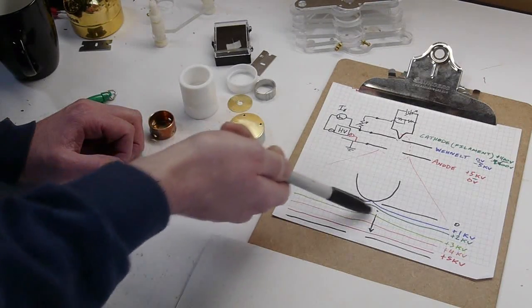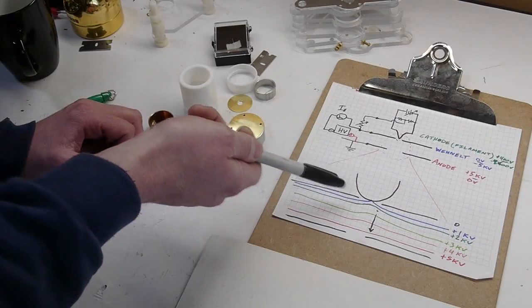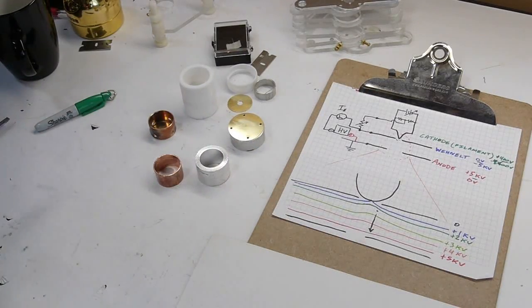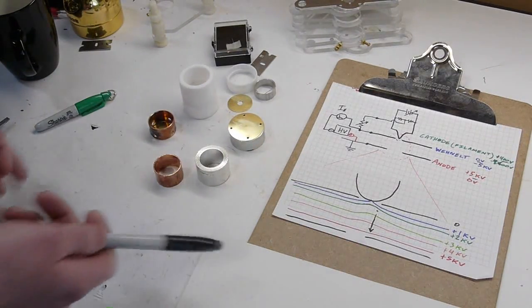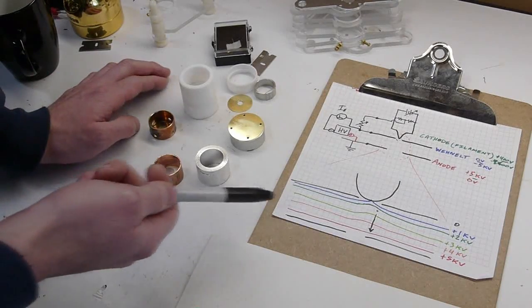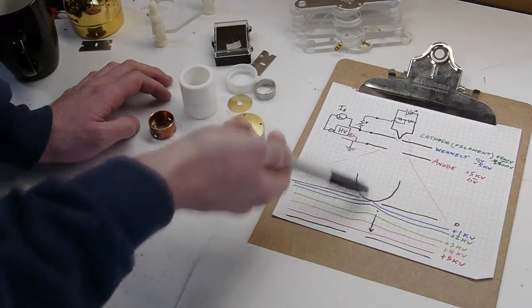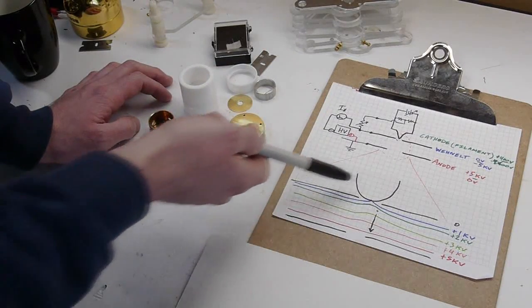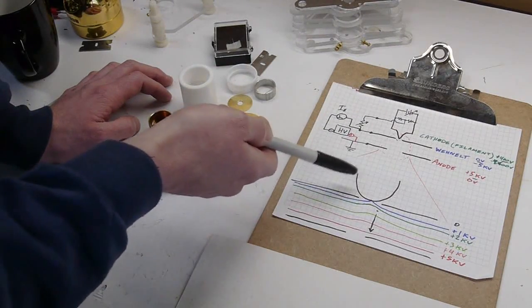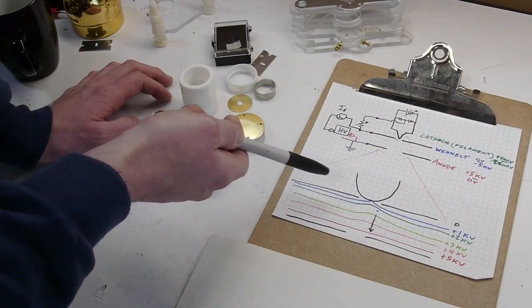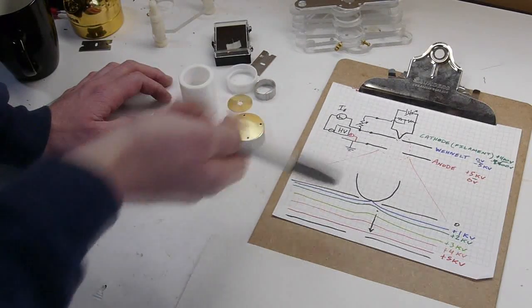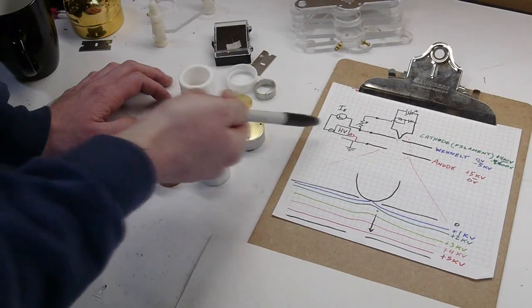So if we look at the two extremes of the situation, we either have no electron emission or tons of electron emission. We can guess that if we set this value to be something appropriate, we can actually control the electron emission by regulating the voltage between the filament and the Wenelt. So it's some happy medium. And in this case, with these sizes and voltages, it comes out to be on the order of a couple megaohms.